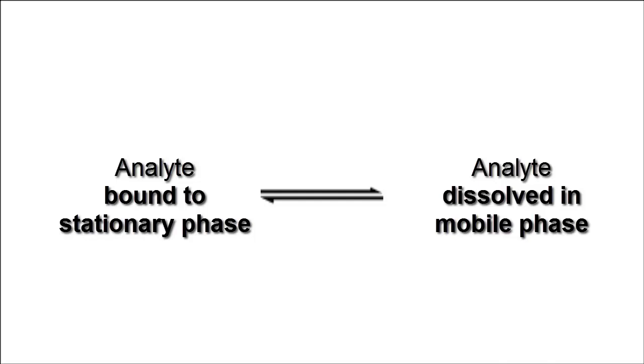So the equilibrium for an analyte that is very polar, trying to travel across a polar surface, is going to lie in the direction of the analyte being bound to the stationary phase. Therefore, we would expect for that analyte to travel very slowly. Why? Because it's going to spend less time in the mobile phase, which is the only thing that's actually moving.